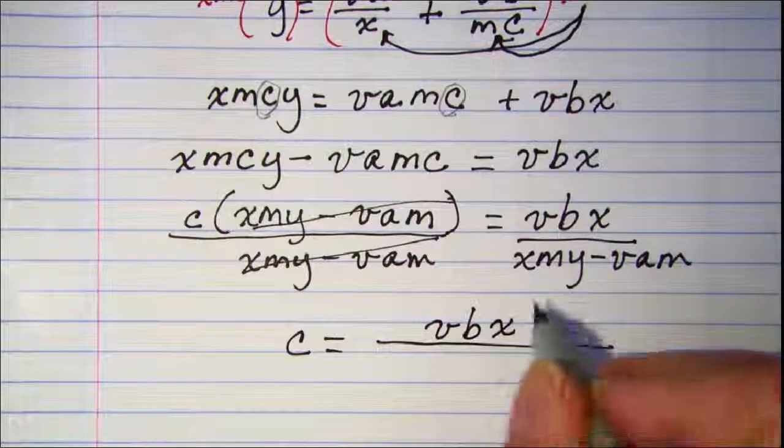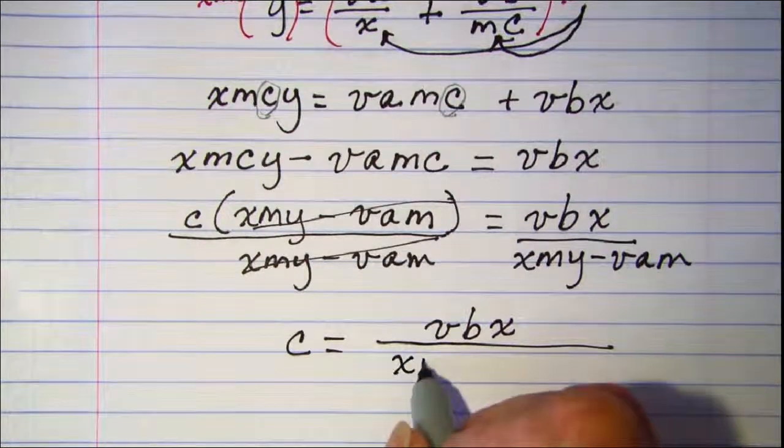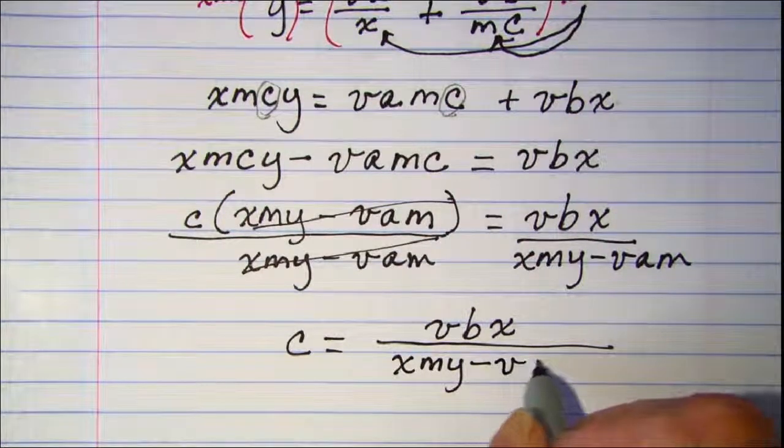And we end up with c equals vbx over xmy minus vam.